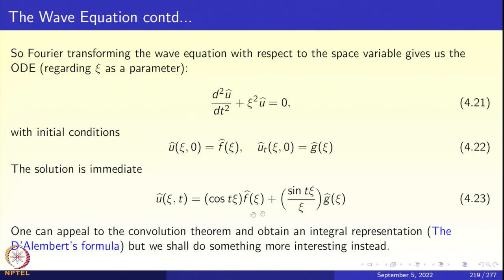Putting t = 0 and checking: the sine part disappears, cosine becomes 1, giving the first initial condition. Differentiating and putting t = 0 gives the second. One could take the inverse Fourier transform of this to obtain an integral representation for u — yielding D'Alembert's formula — but since that is discussed in most books, I will leave it to you. What we are going to do instead is something far more interesting: we will work with equation 4.23 using the Parseval formula to study the principle of conservation of energy.